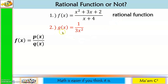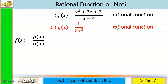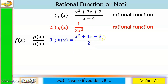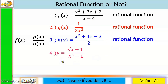Next: g(x) = 1 / (3x²). 1 is a constant and it is a polynomial; 3x² is also a polynomial. Rational function. Next: h(x) = (x² + 4x − 3) / 2. This is a polynomial and this is also a polynomial. Rational function.